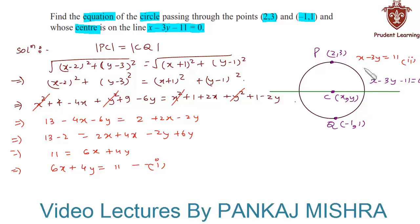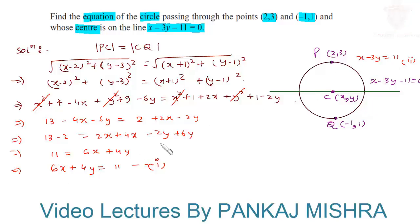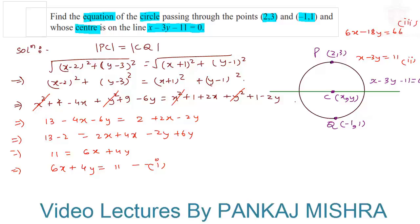On solving these two equations simultaneously we'll get the values of x and y. We multiply Equation 2 throughout by 6 to make the coefficient of x equal in both equations, giving us 6x minus 18y equals 66. Call this Equation 3, and now we will subtract Equation 3 from Equation 1.